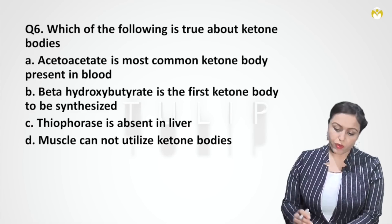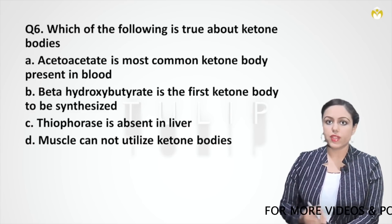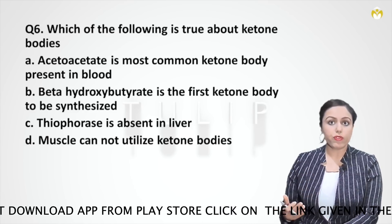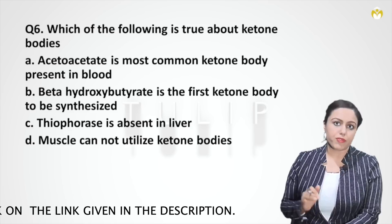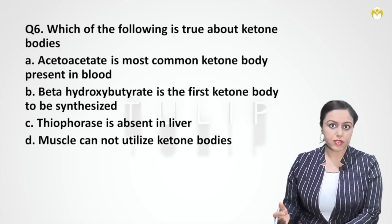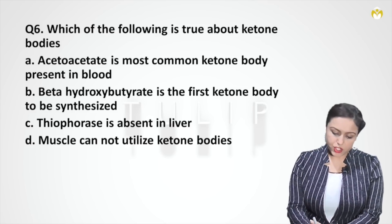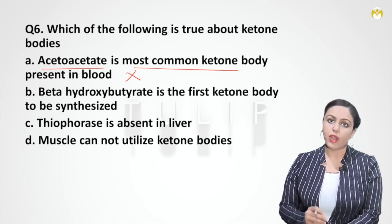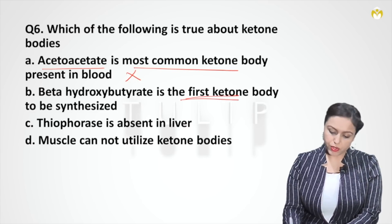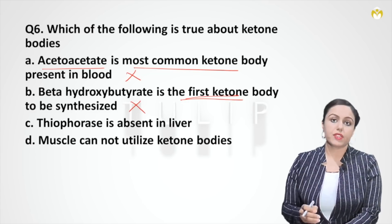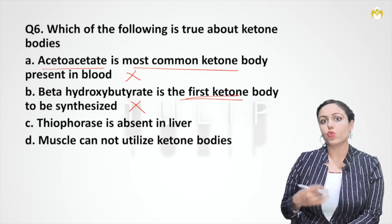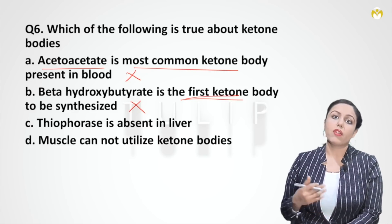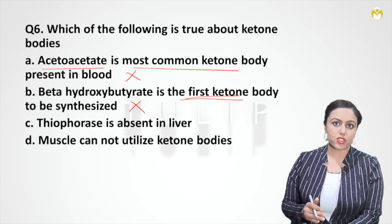Question six: which of the following is true about ketone bodies? We have three ketone bodies: acetoacetate, beta-hydroxybutyrate, and acetone. These are formed during starvation and also in diabetic persons because glucose is not entering the cells. Option A says acetoacetate is the most common ketone body — this is wrong, because beta-hydroxybutyrate is the most common ketone body found in blood and urine. Option B says beta-hydroxybutyrate is the first ketone body synthesized — no, acetoacetate is the first, which is why it is called the primary ketone body; the other two are secondary ketone bodies.